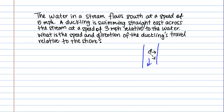So that's our goal here. There's a useful relationship we're going to use: the velocity relative to the ground equals the velocity relative to the water plus the velocity of the current. And we're looking for the velocity relative to the ground.